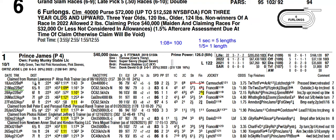We're going to focus on one horse, Prince James, from race six on July 20th at Saratoga. We'll go over the target and ability ratings and how to figure them out. First, I have the six-furlong times highlighted here. When I figure out a target rating or an ability rating, I use the six-furlong time as an indicator — that's where I start, regardless of today's race distance.